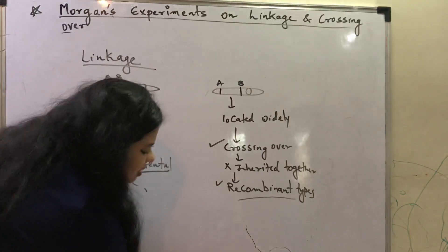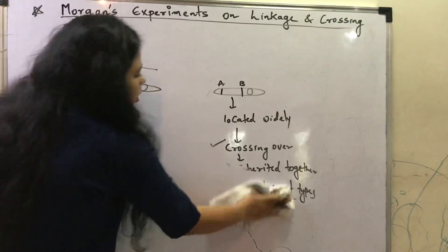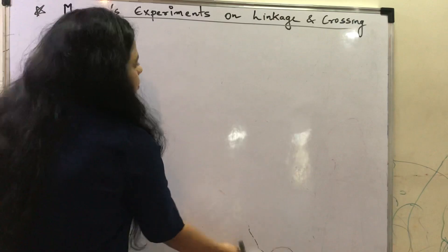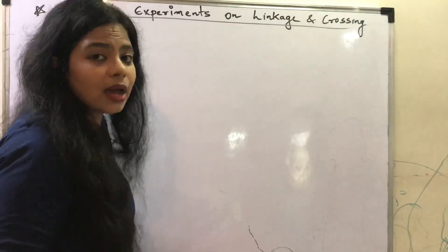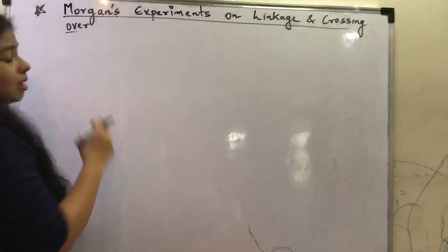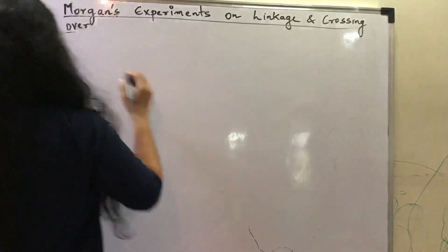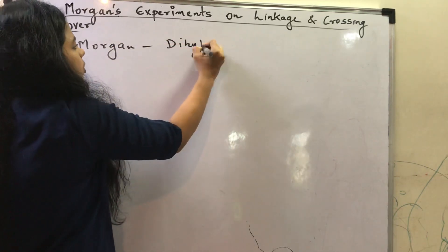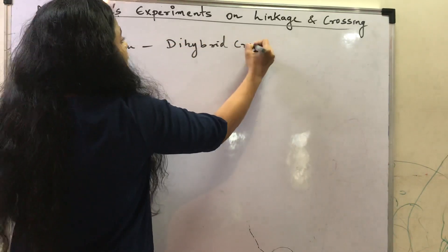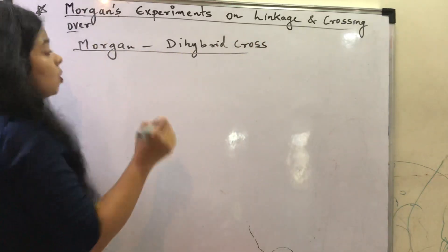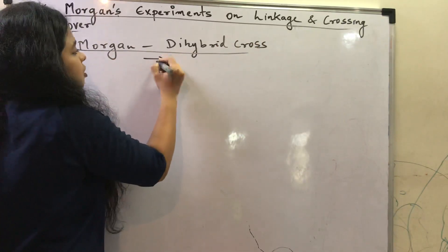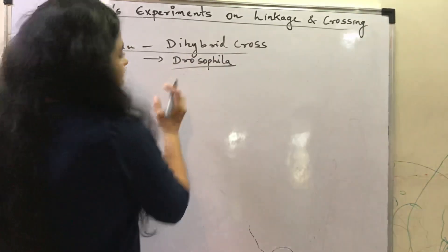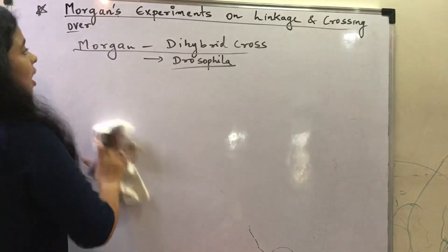Now let's start with the cross. Mendel had carried out a dihybrid cross. Similarly, Morgan also carried out a dihybrid cross. Morgan carried out his experiment using Drosophila, which is nothing but the fruit fly.